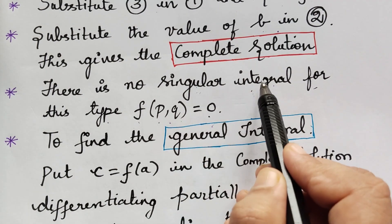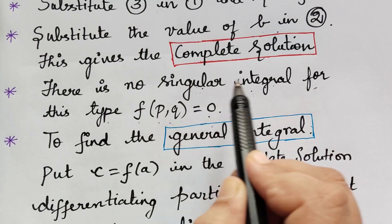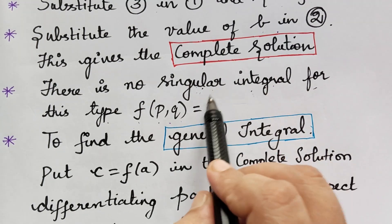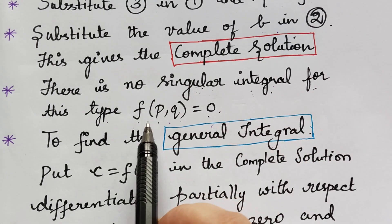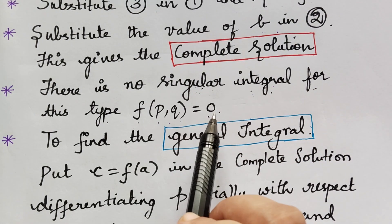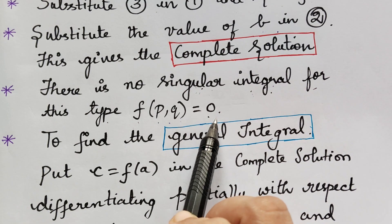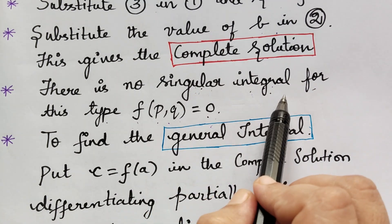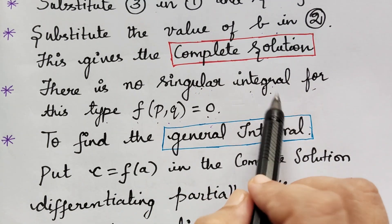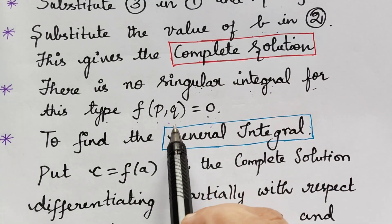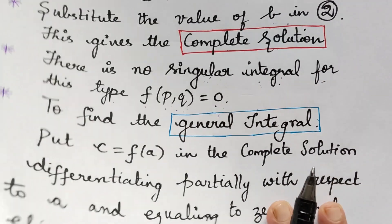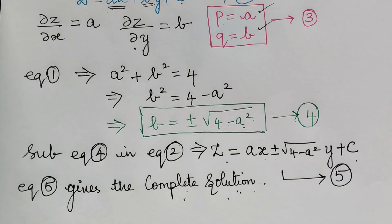Singular solution is also known as singular integral — you can use either term. For the form f of p, q is equal to 0, we do not have the singular integral, but it is necessary to mention this in the problem. So we write that there is no singular integral.